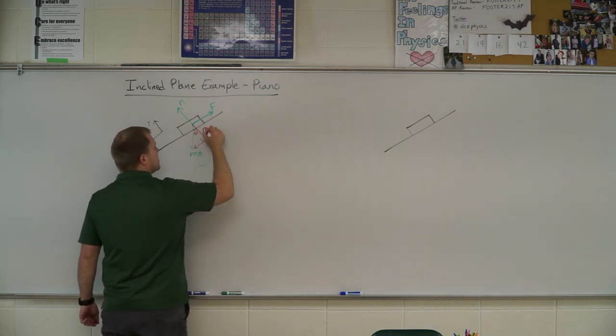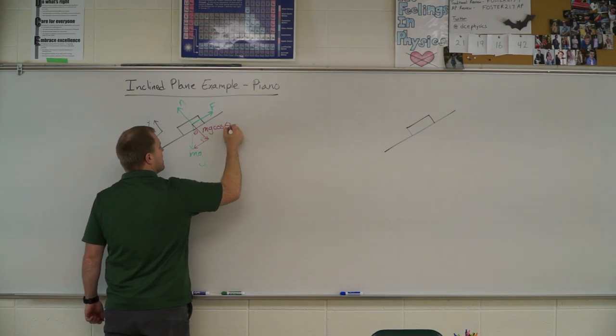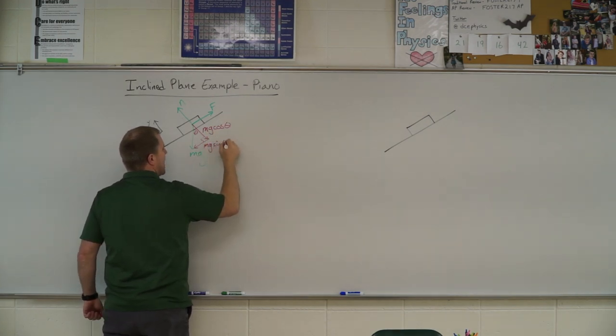Alright, so this side here is adjacent. So this is mg cosine of theta. This side is opposite. So this is mg sine of theta.